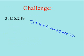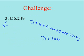That equals 33. If you don't know that 3 goes into 33, you add 3 plus 3 equals 6. 3 goes into 6, and that means 3 goes into 33, so 3 goes into 3,456,249.